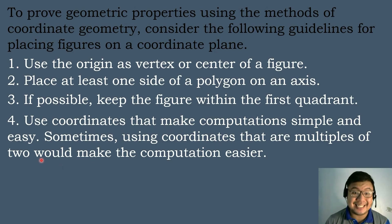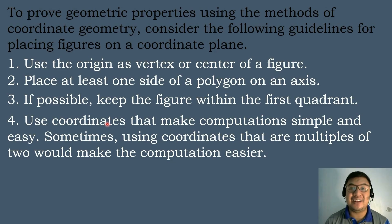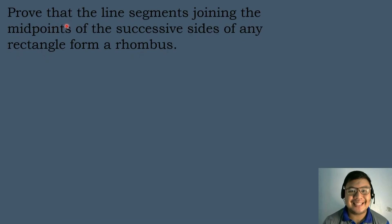And then the last guideline is to use coordinates that make computation simple and easy. Sometimes using coordinates that are multiples of 2 would make the computation easier. So these are the guidelines we must follow to prove geometric properties in a much easier and faster way.